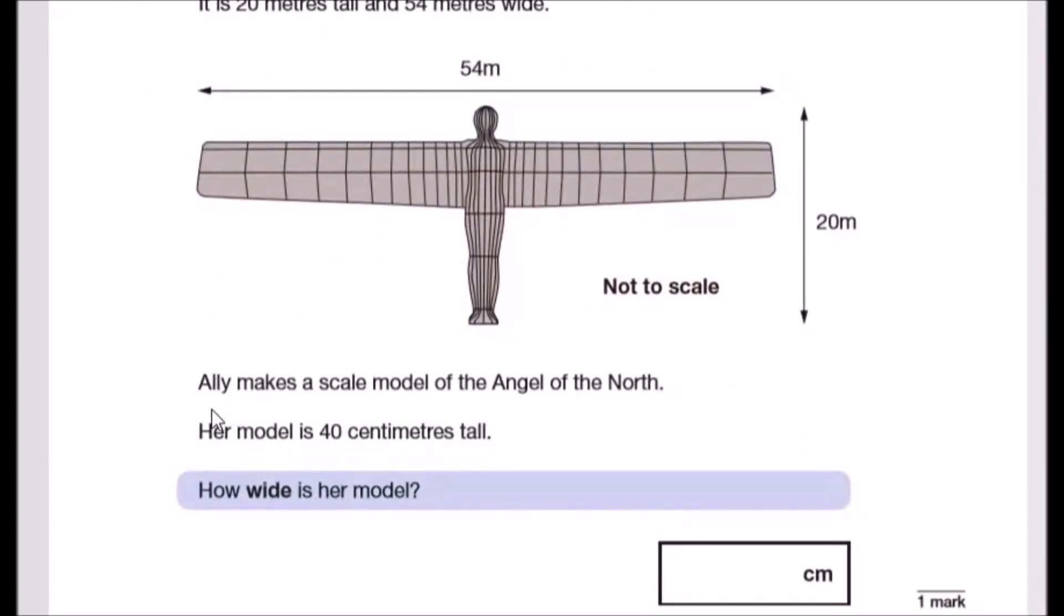Ally makes a scale model of the Angel of the North. Her model is 40 centimeters tall. Now scale is something you write on paper, so we say that she did on paper for the height of 40 centimeters that seems to be kind of equal to 20 meters in real life. So you can kind of see that for every meter is doubled. We can say that for every one meter, if we divide by 20, it's like two centimeters. Two centimeters on paper is like one meter in real life.